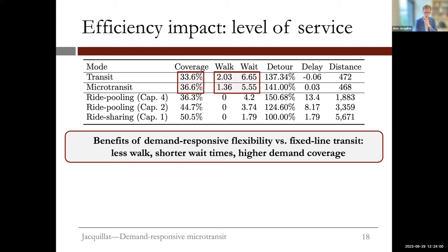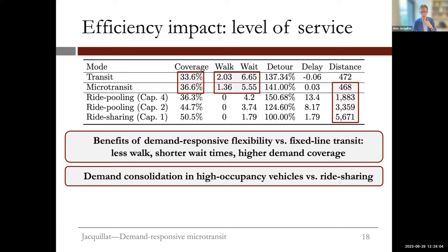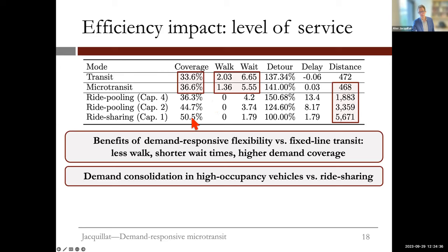Comparing microtransit to ride-sharing with a capacity of one—ride-hailing—by design provides door-to-door transportation with no walking, lower wait times, and higher coverage. But we need far more vehicles: we serve roughly 50% more people but with 10x the distance and 10x the number of vehicles. Microtransit, by contrast, achieves demand consolidation. Comparing microtransit to ride-pooling with a capacity of four, both aim at consolidation in vehicles. They achieve exactly the same demand coverage, but microtransit has lower delay because passengers can plan their trip based on the reference line.